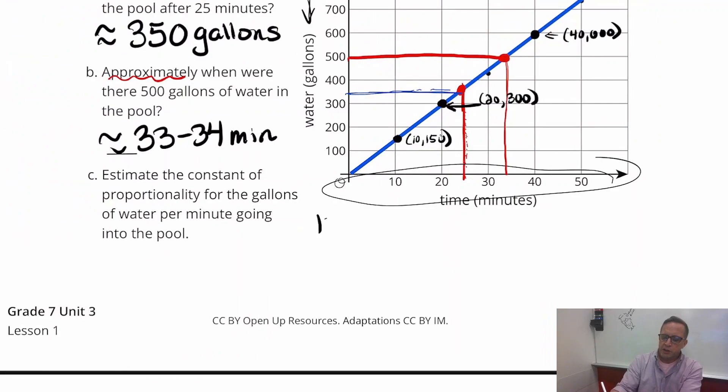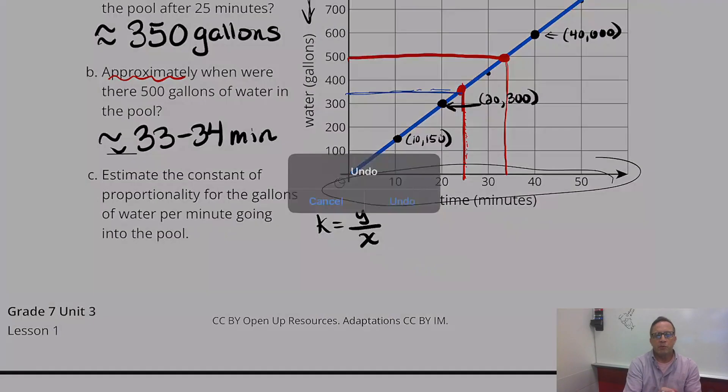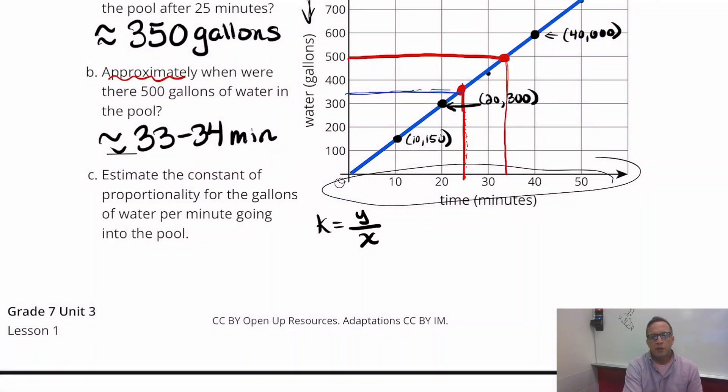And so to find the constant of proportionality, remember, it is just a matter of taking your Y and comparing it to your X. Y to X. Y divided by the X. So that's what we're going to do. We're going to do 150 divided by 10. So the Y is 150 divided by 10. That's going to be 15. So that's got a constant of proportionality of 15. I'm going to do some more here.